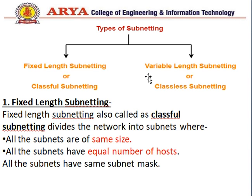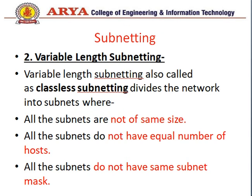There are two basic types of subnetting: fixed-length subnetting and variable-length subnetting. Fixed-length is also called classful subnetting, and variable-length is called classless subnetting. In fixed-length subnetting, the network is divided into subnets of the same size, with an equal number of hosts and the same subnet mask for all subnets. In variable-length subnetting, the subnets do not have the same size, equal hosts, or the same subnet mask.